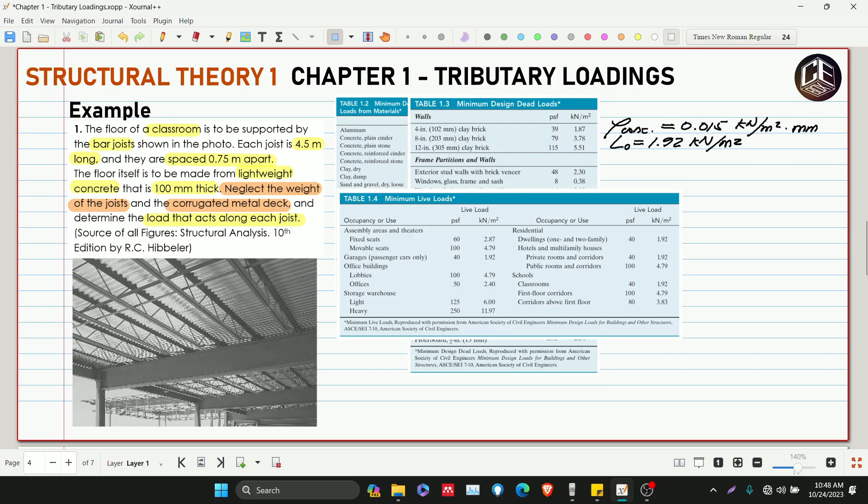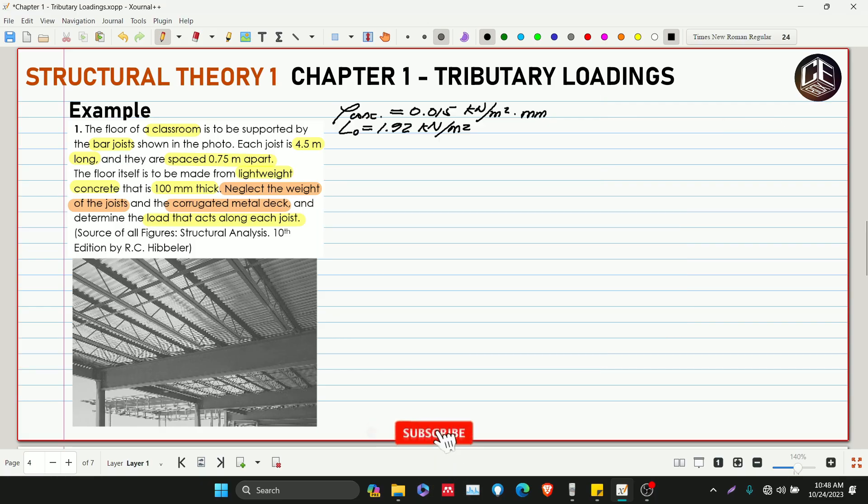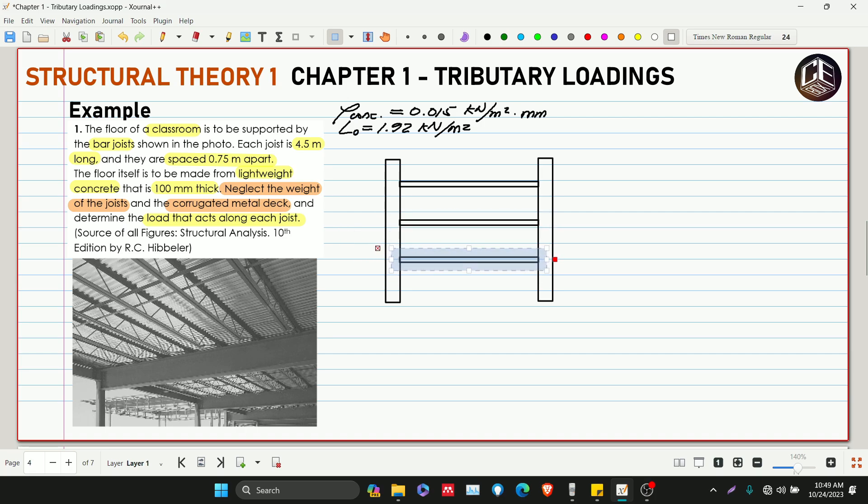Let's draw the joists and the girder beam. The length of the joists is 4.5 meters and the spacing is 0.75 meters apart.